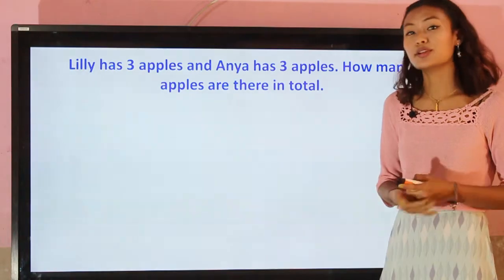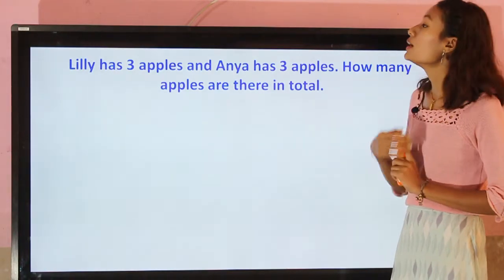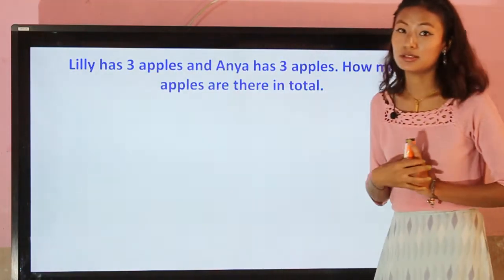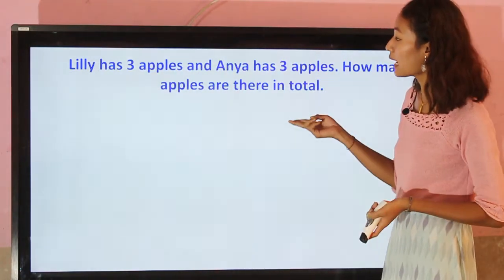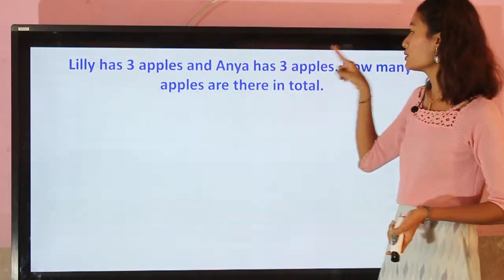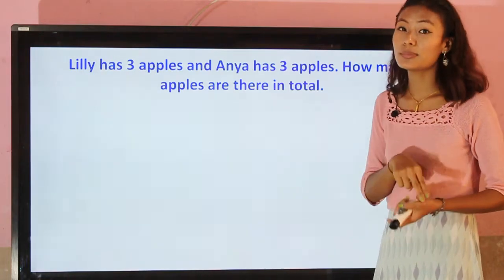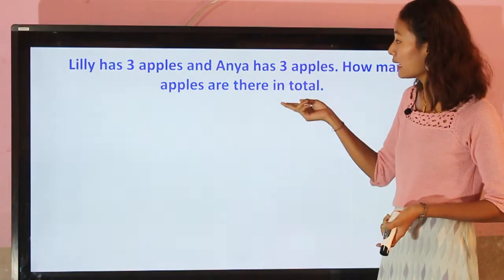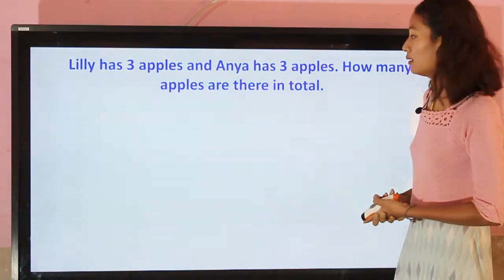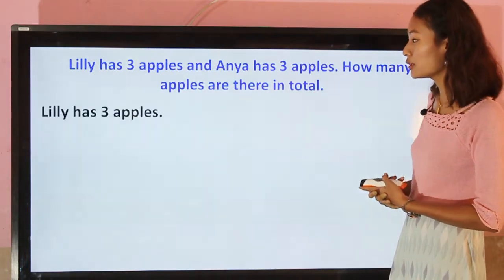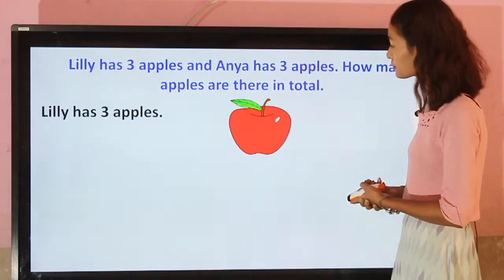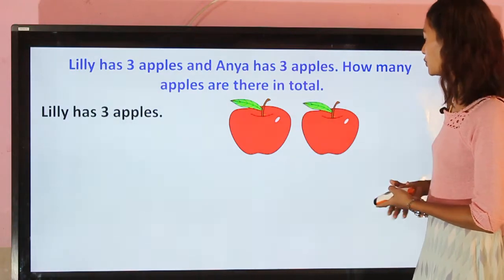Let's do more exercise. Lily has three apples. Let's draw three apples here: one, two, three.